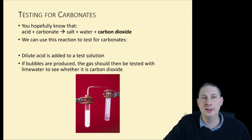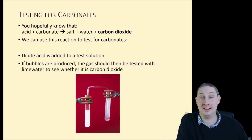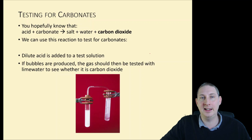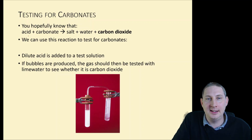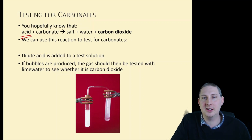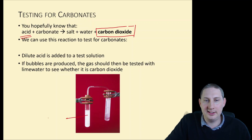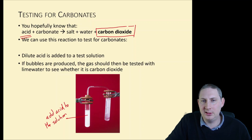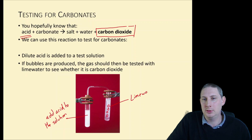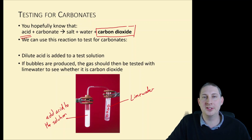The very final test you need to know for C8 is testing for carbonates. We can test for carbonates by adding an acid. From year 8 you know that acid plus carbonate makes a salt plus water plus carbon dioxide. One of the gas tests you need to know is how to test for carbon dioxide using lime water. We add acid to the solution; if a gas is formed we bubble it through lime water. If the lime water goes cloudy, the gas was carbon dioxide, meaning the original sample contained carbonate.